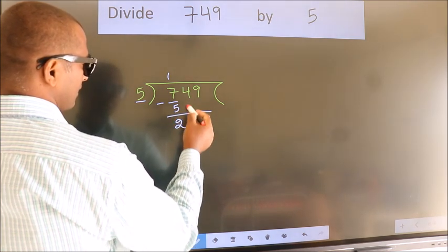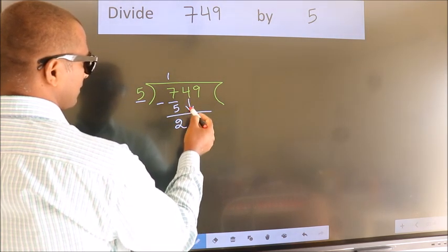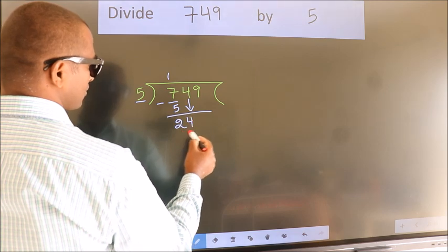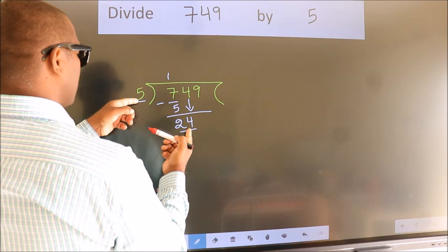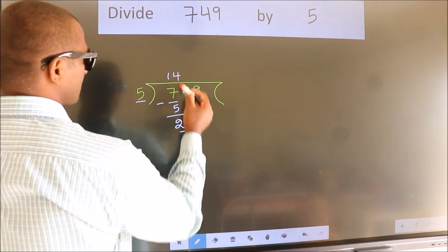After this, bring down the beside number, so 4 down. So 24. A number close to 24 in the 5 table is 5 fours 20.